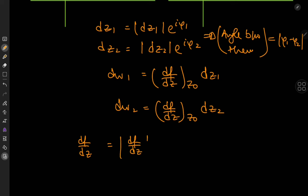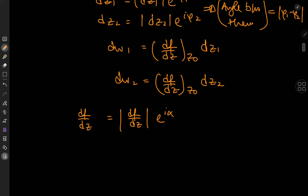As df by dz absolute value times e to the i alpha where alpha is the argument and this implies that dw1 equals absolute value df by dz times e to the i alpha and expanding dz1 in this form as well gives me absolute value dz1 times e to the i phi1.